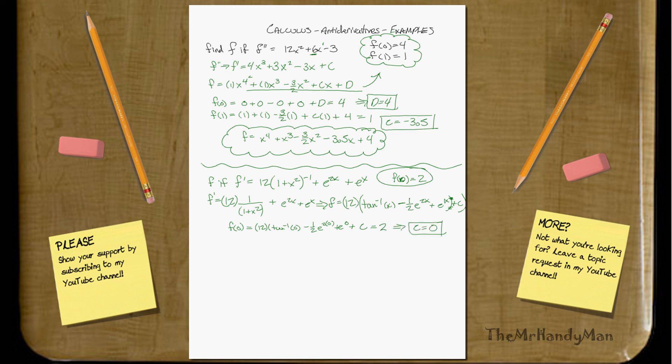So our function, f of x, will just equal 12 tan⁻¹(x) + 1/2 e^(2x) + eˣ.